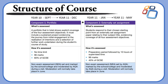In year 11, from January through to May, you produce component 2, which is an externally set task whereby students respond to their chosen starting point from a set of assignment papers — picking a subject title, producing a body of work, and then a final piece over 10 hours. That is worth 40% of your overall GCSE. It's worth noting that whilst it's a 10-hour exam in exam conditions, it is not a written exam. It takes place in the classroom and it is a piece of art.